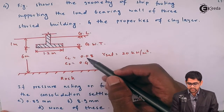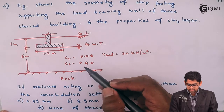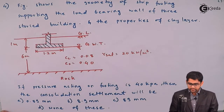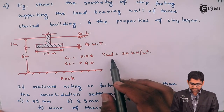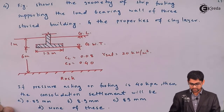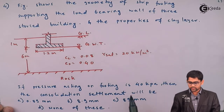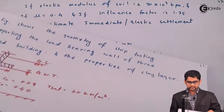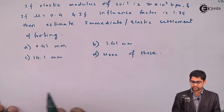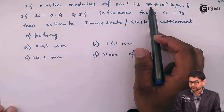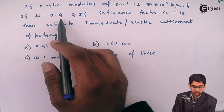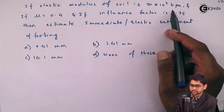CC, the compression index, is given as 0.08. E0, the initial void ratio of the soil before placement of the strip footing, is 0.4. Gamma saturated is the unit weight of the saturated clay layer. The first part asks us to evaluate the consolidation settlement if the pressure acting on the footing is 40 kPa. The second part asks us to evaluate the immediate or elastic settlement, for which the Young's modulus of the soil, ES, is 50 × 10³ kPa.